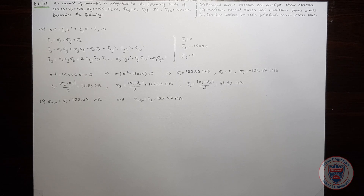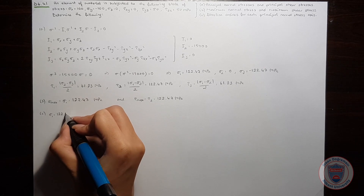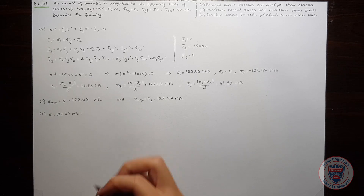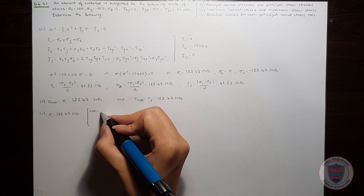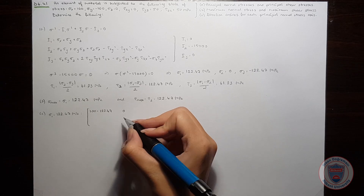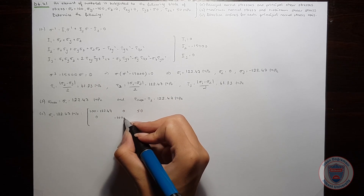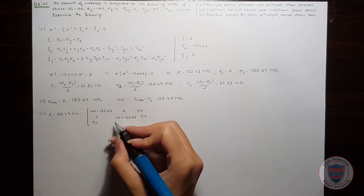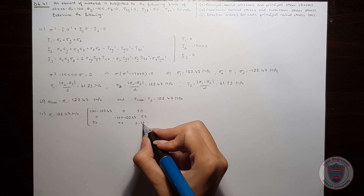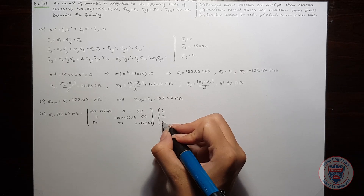Now we can determine the direction cosines for each principal normal stress axis. Starting with sigma_1 equal to 122.47 MPa, the matrix we obtain is: row one: (100 minus 122.47), 0, 50; row two: 0, (minus 100 minus 122.47), 50; row three: 50, 50, (0 minus 122.47). We multiply this matrix by [L1, M1, N1] and set it equal to zero.